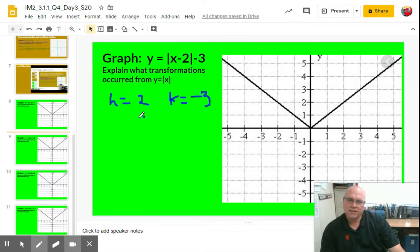So h, k is going to be our vertex: 2 comma negative 3. So I go right 2, down 3... 1, 2, 3. There's my new vertex. So my translation was—you should have said you went right 2 and you went down 3.